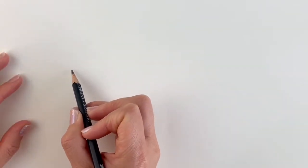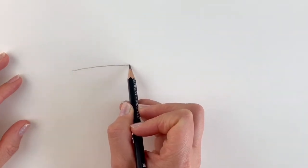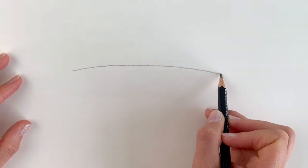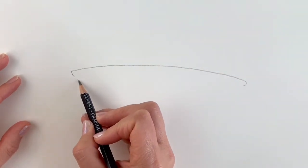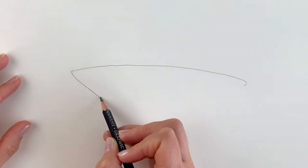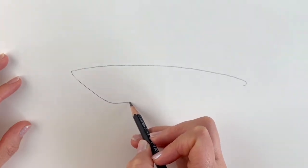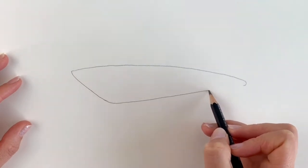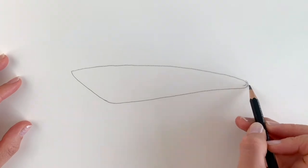We're going to start off our Spitfire with a shape like this, so just lightly in pencil just follow what I'm doing. Remember if I go too quickly just hit pause and rewind.